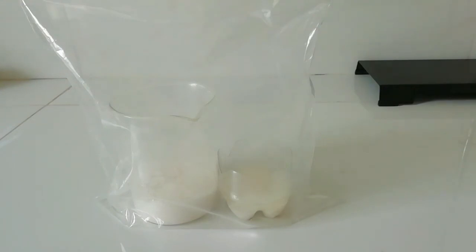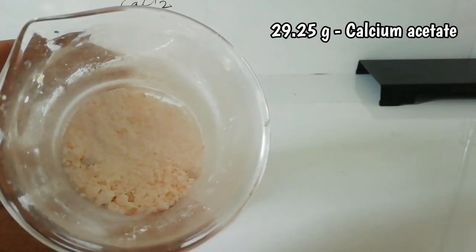So in the left side beaker there is calcium acetate solid right now, and on the right side there is a container with anhydrous calcium chloride. I kept the solution about 20 days. Now the solid is completely separated.